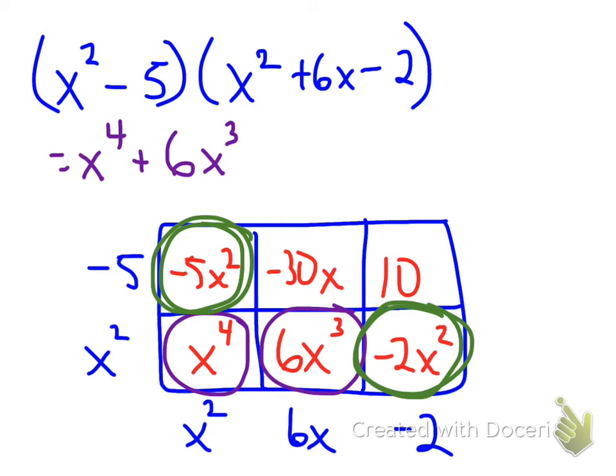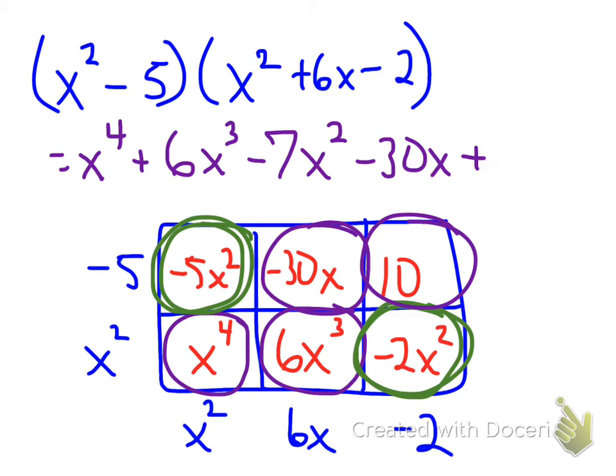So negative 5x squared and negative 2x squared will give me a total of negative 7x squared. One box here with just x's, so I have negative 30x. And then my constant term is plus 10.